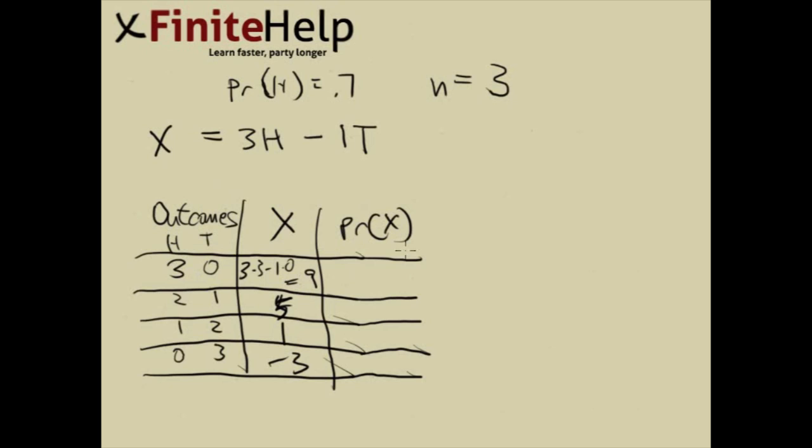These are going to be Bernoulli trials. Probability of X equals 9 is going to be the probability of this particular outcome. This is a Bernoulli trial, as I've said. So we're going to be using the binomial formula.